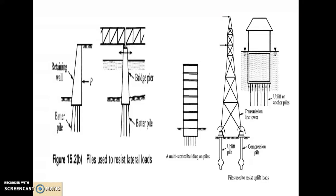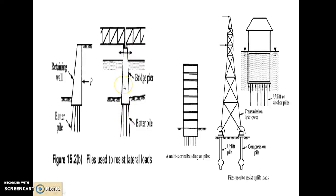Let us go through some examples where pile foundation can be useful. Taking the example of a bridge pier: under this bridge pier, you may see vertical piles and some inclined piles. Over that pier there is a truss, and through this truss a traffic load will move. If some lateral load acts upon the pier, then to counterbalance these lateral loads, the inclined piles are provided, and to counterbalance the vertical downward loads, the vertical piles are there. This is how piles are very useful in transmission of load to a deeper stratum.